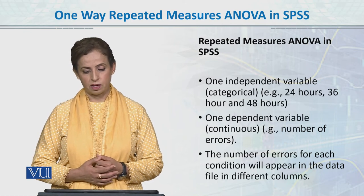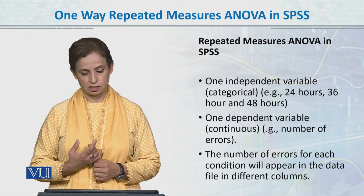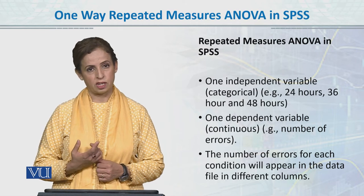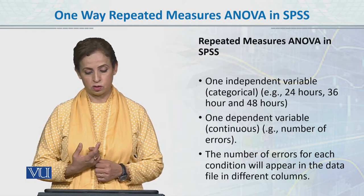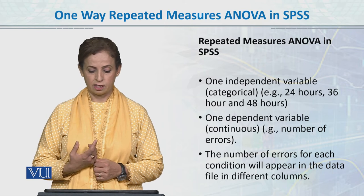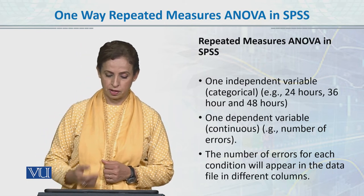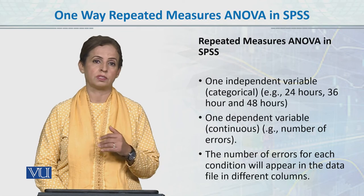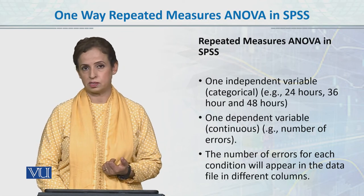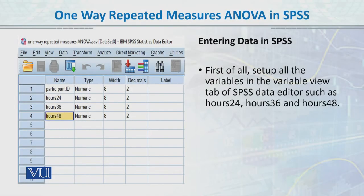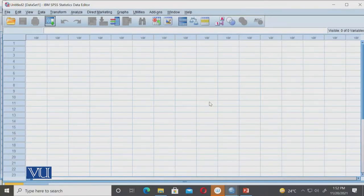One independent variable, categorical — 24 hours, 36 hours, and 48 hours — and one dependent variable, the number of errors on the motor skill task. The number of errors for each condition will appear in different columns, so we have three columns for the performance task. This is the SPSS environment. Now I'll open a new data file.